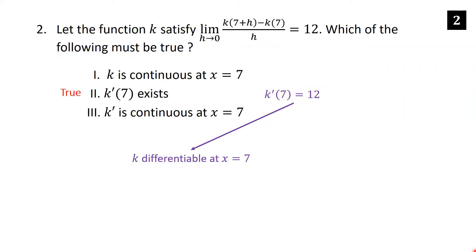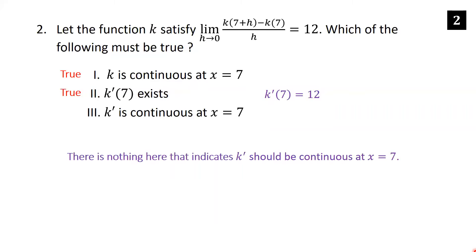Since k′(7) = 12, k is differentiable at 7, and differentiability at 7 implies continuity at 7 — so the first statement is also true. For the third statement, there is nothing here that indicates k′ is continuous at x = 7. As a challenge, try to construct a function k where k′(7) exists and k is continuous, but k′ is not continuous at x = 7. So the third statement is false.